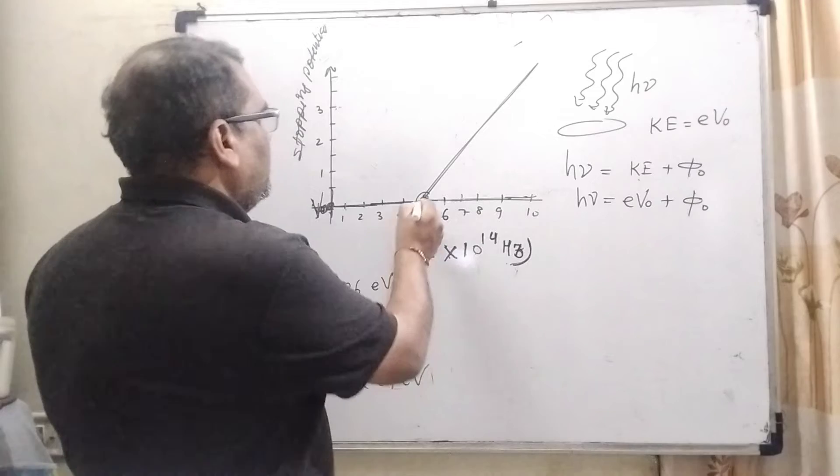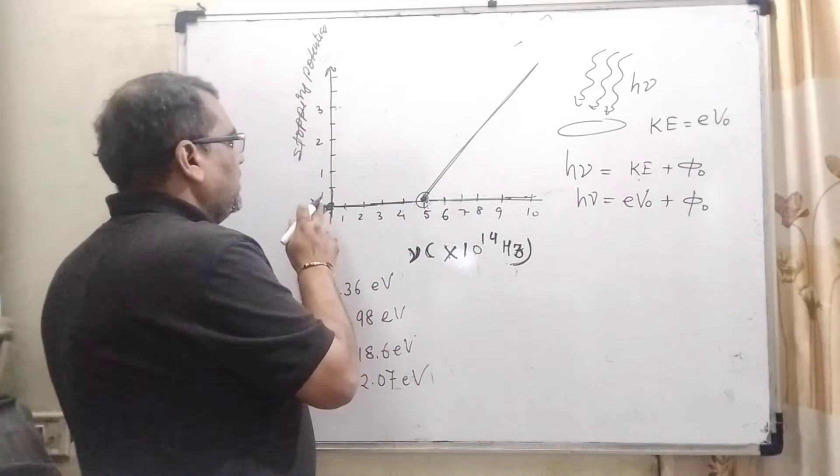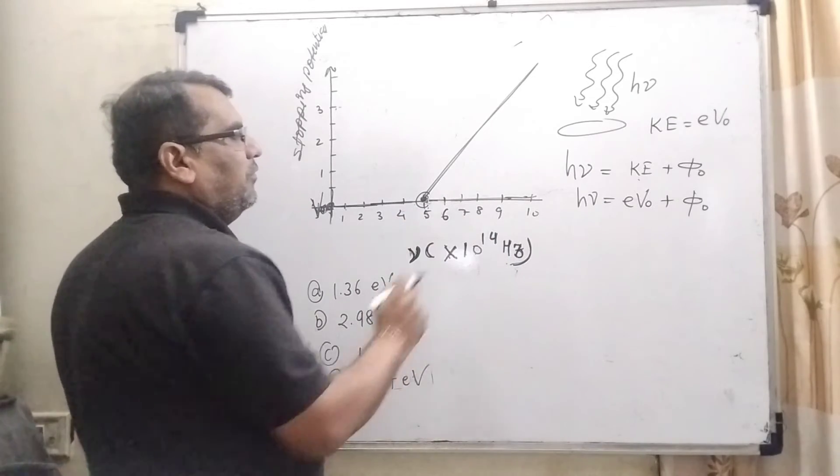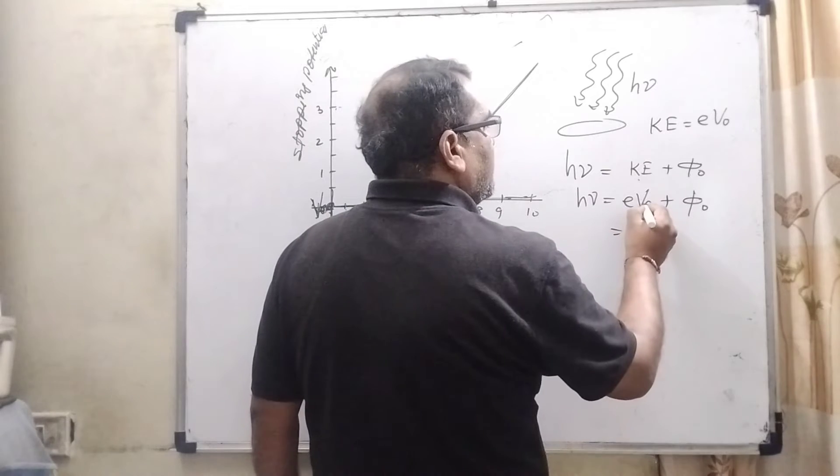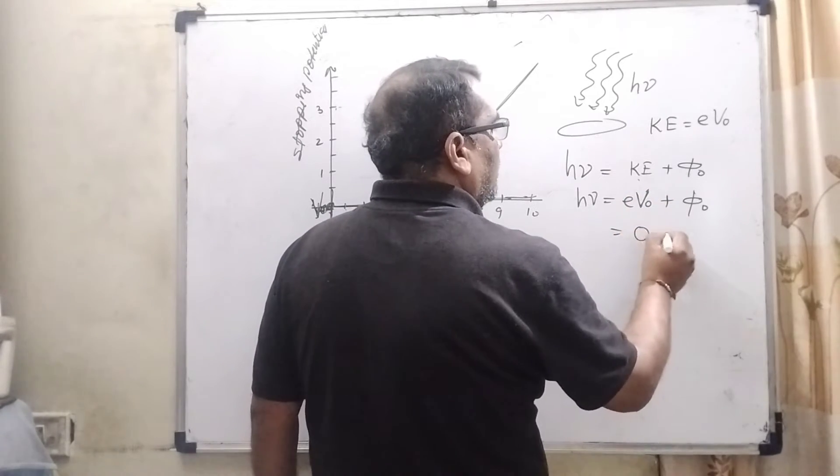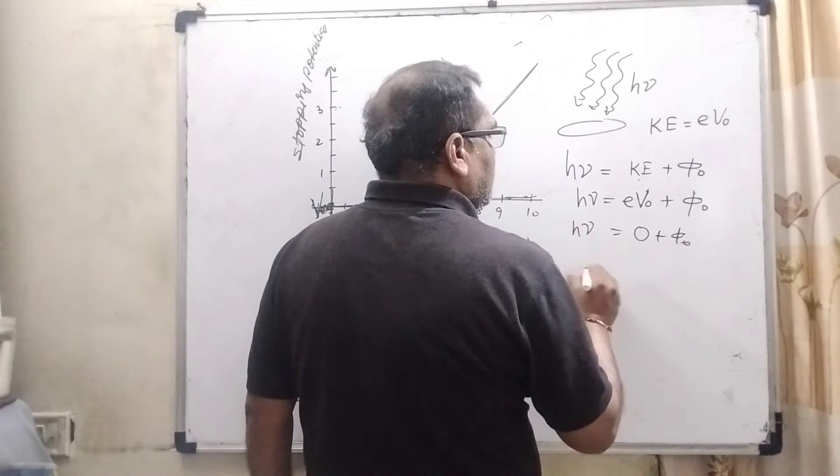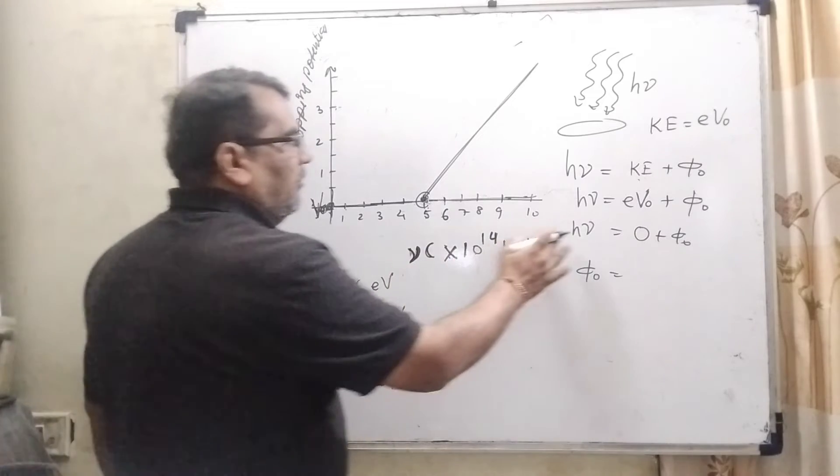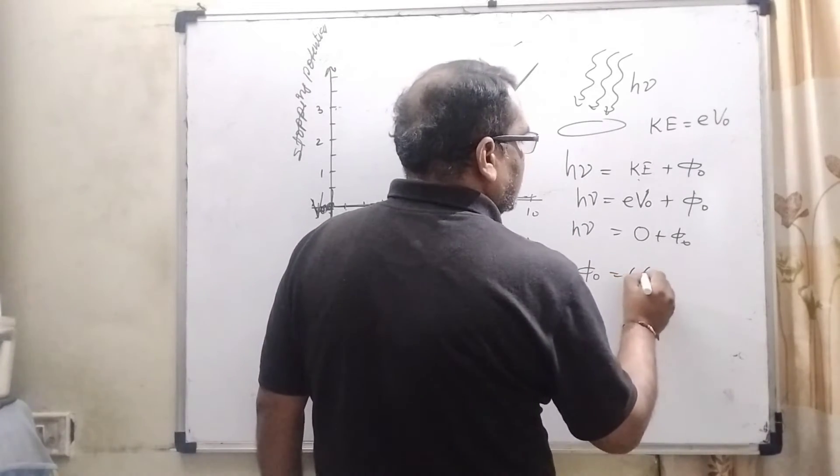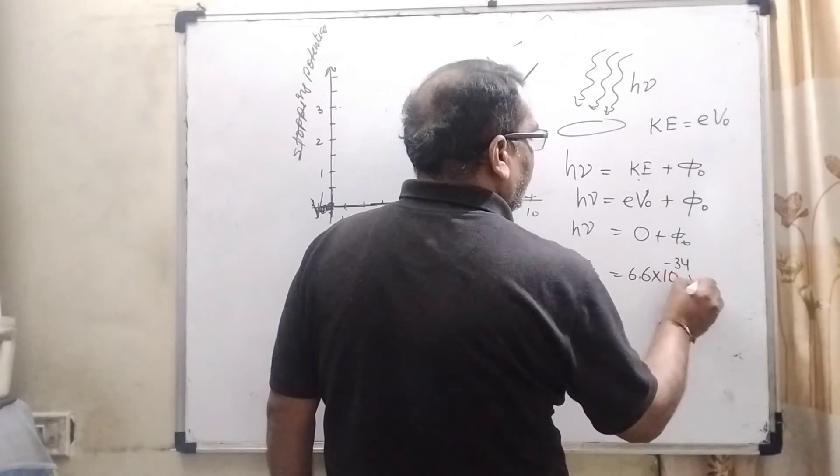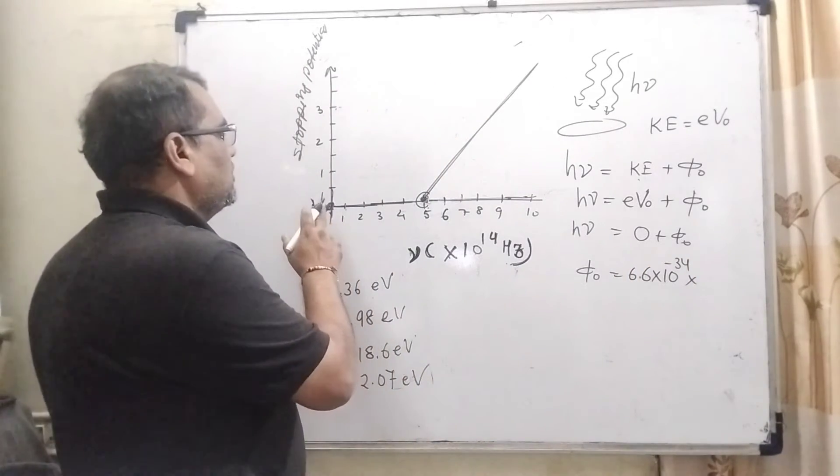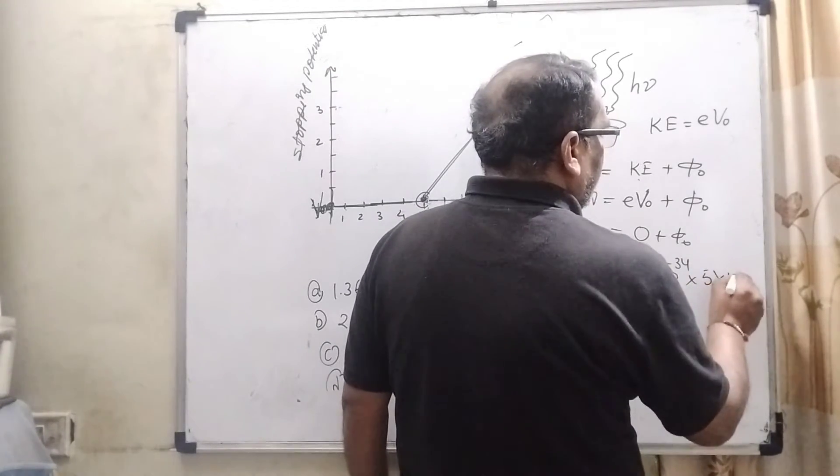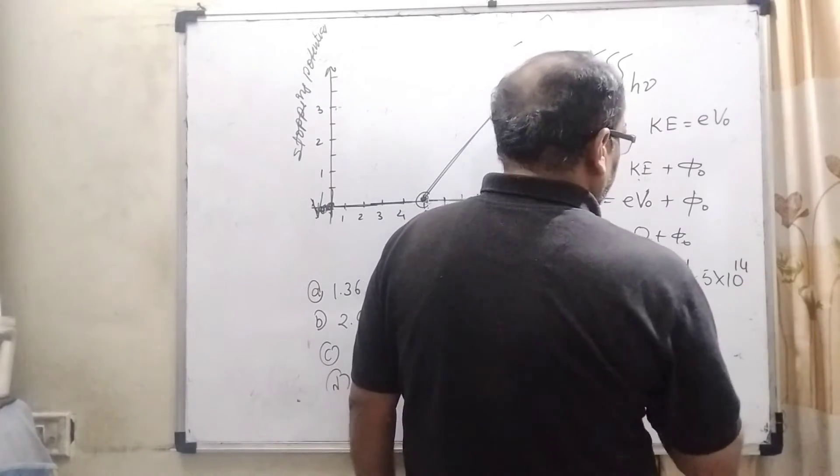But in this condition, according to the graph, we can see here when cutoff potential V0 is 0, that time frequency is 5 into 10 raise to power 14 hertz. So here we substitute: hν = 0 + φ0. Then substitute all this value according to the given graph. Here what is the value of Planck constant? 6.6 into 10 raise to power minus 34. And what is the frequency when stopping potential is 0? 5 into 10 raise to power 14.